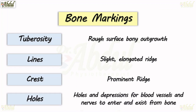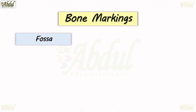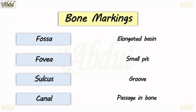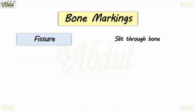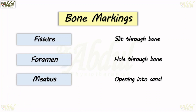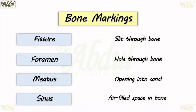Holes and depressions found on the bone serve as entry and exit points for blood vessels and nerves. Fossa: elongated basin type. Fovea: small pit. Sulcus: groove. Canal: passage in the bone. Fissure: slit through bone. Foramen: hole through bone. Meatus: opening into a canal. Sinus: air-filled space in bone. These are the bony markings which you need to learn to understand the bone and to overall understand anatomy.